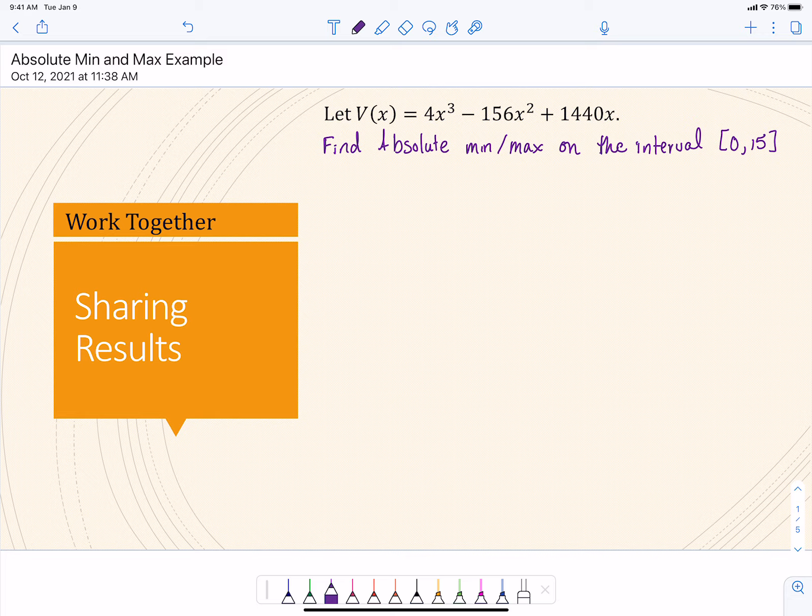So anytime we're asked to find min or maxes, whether it's absolute min or maxes like this or local min and maxes or increasing, decreasing, the first thing that we want to do is take the first derivative of our function and then set it equal to zero so that we can find those critical points. And I always double check with polynomials like this, particularly that have a leading coefficient like this one here with 12, to see if that 312 and that 1440, if those are multiples of 12, because if this factors, if we factor out that 12, that makes things much easier to deal with. And we can factor out that 12.